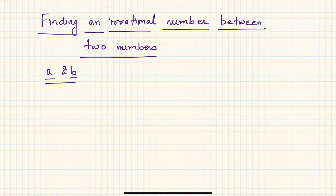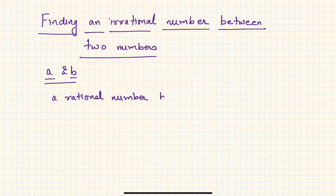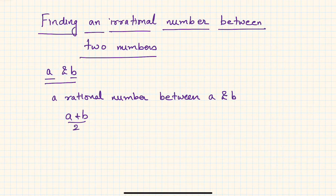If you recall, what did we do when we had to find out a rational number between two numbers? A rational number between a and b is nothing but the average or arithmetic mean of them — so (a + b) / 2 is a rational number lying between a and b, if a and b are not equal.